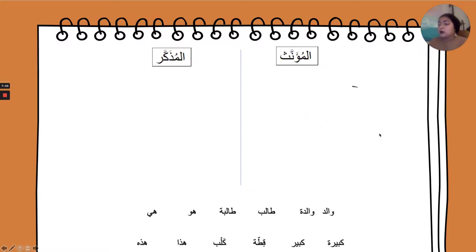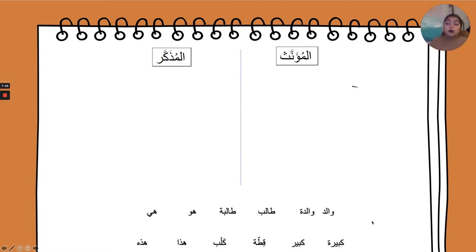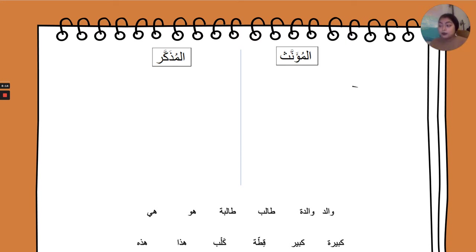Let's do an example. I have two categories written out: المؤنث — feminine — and المذكر — masculine. We've got a series of pronouns and adjectives that you should know, and I'll go through all of them. In your notes, make a T-graph in your notebook and put each word in the correct category. Go ahead and pause the video, then come back.